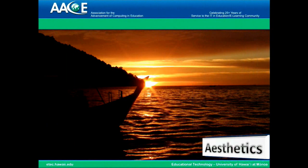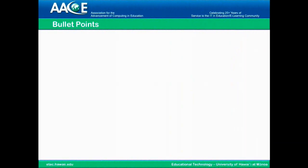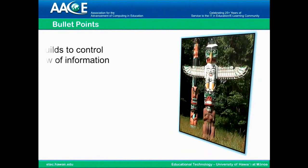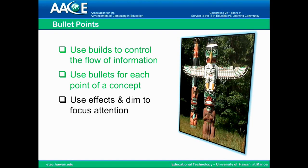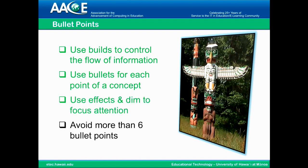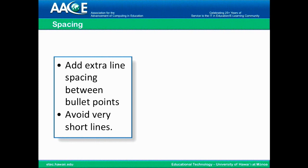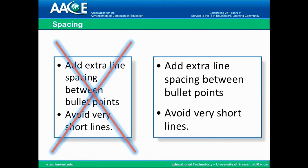You can use builds to control the flow of information. Use bullets for each point in a concept, and use effects and dim to focus the attention. Avoid having more than six bullet points on one page. Instead of using the automatic spacing, you can add extra line spacing between bullet points, and also avoid having very short lines by stretching your text box.